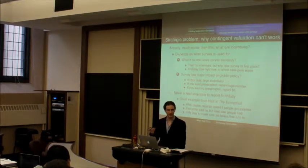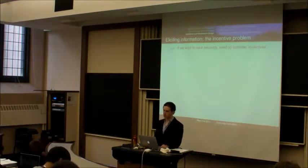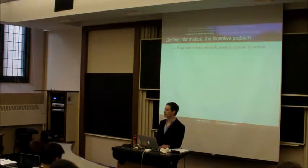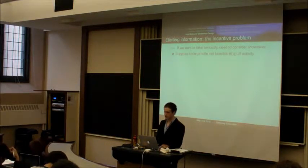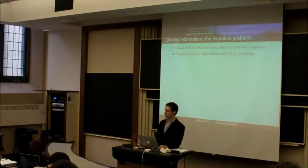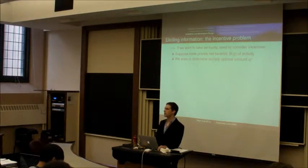So the point that I was trying to make is that if we actually want to take seriously the problem of figuring out how we can get this information out of people, we need to think more seriously about what they have an incentive to say and what they have an incentive not to say. So let's put a little bit of a model on this. Imagine that the private benefits of an activity are b(q) and we want to determine the socially optimal amount. Now if there were no externalities that would be just to set b prime equal to zero, but there might be some externalities associated with this.